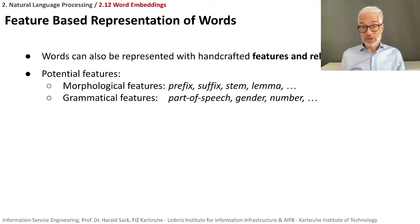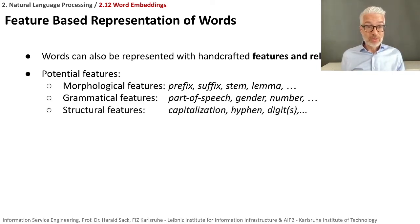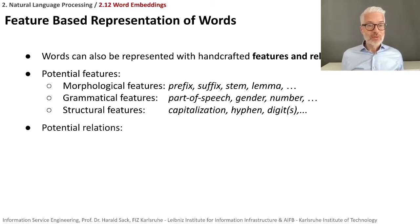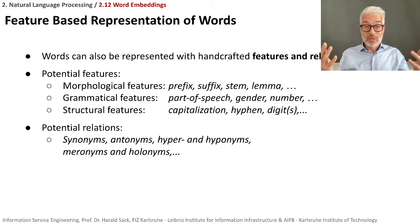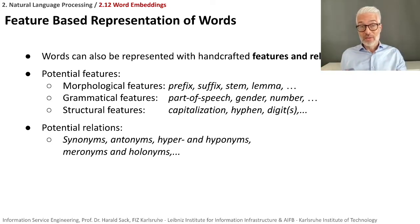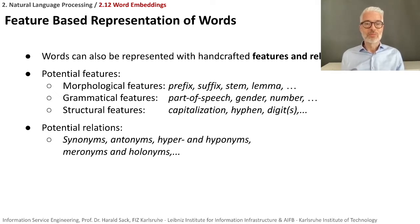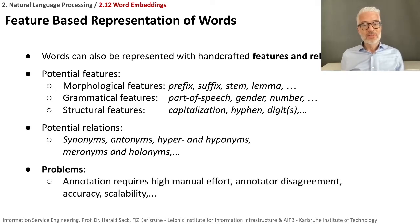Other potential features include grammatical features such as part of speech, which could help distinguish polysemous words, as well as gender and number — singular or plural. Structural features include whether a word is capitalized, lowercase, contains a hyphen, or has digits. You can also look at relations: synonyms, antonyms, hypernyms (more general words), hyponyms (more specific words), meronyms, and holonyms — relations you might find in dictionary-like structures such as WordNet.